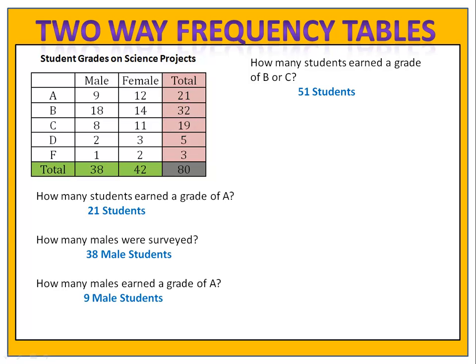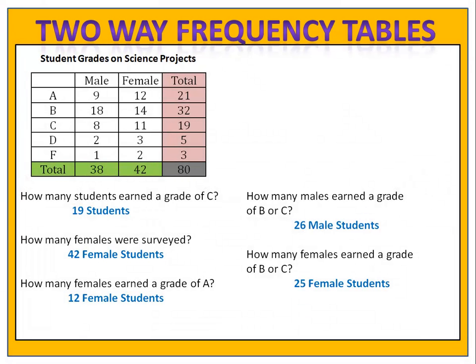The remaining exercises are for you to try. Please pause the video and complete the exercise. In this exercise, we find that nineteen students have a C. We have a total of forty-two females and twelve females who earned a grade of A. We also learned that there were twenty-six males and twenty-five females who earned a grade of B or C.